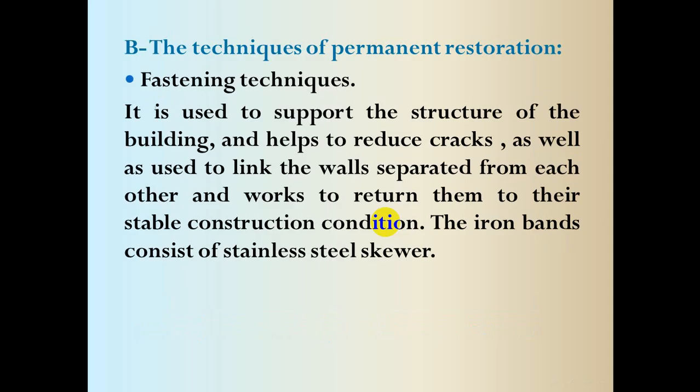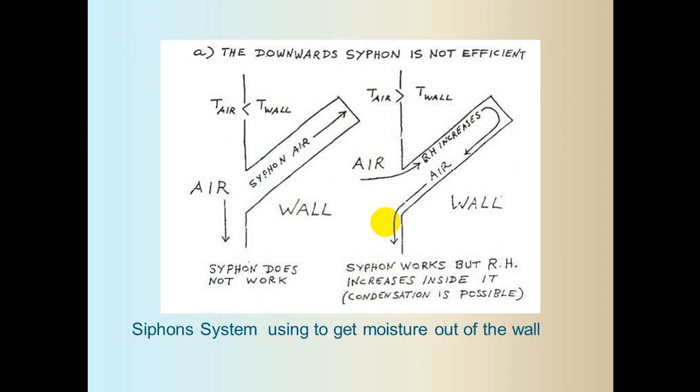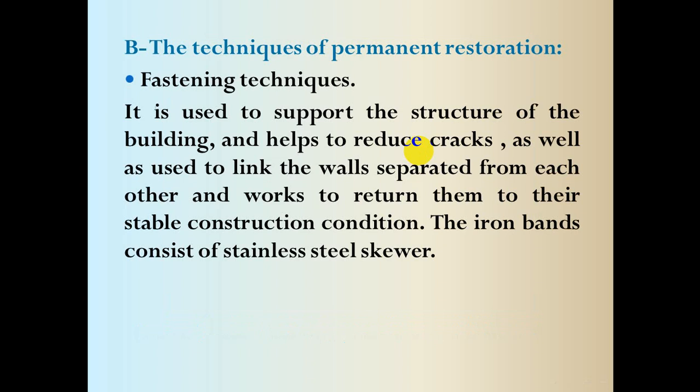These are the temporary restoration techniques — including the drying technique, which is considered temporary and is removed after specialists complete the restoration. For permanent restoration techniques, elements are used inside the heritage building that remain within the building's structure and are not removed, but they are invisible — hidden between the building's elements. Staining/tying techniques (تقنيات التربيط): used to support the structure and reduce cracks.